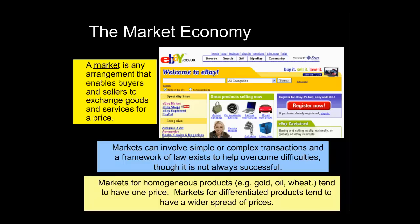Markets can be for two general sorts of products. One is what we might call homogenous products, which tend to have one price. By homogenous we mean they are homogenous at least in the eyes of the consumer, and they normally involve commodities such as gold, oil, wheat, cocoa, coffee, and tea. It's very difficult for sellers, particularly in a competitive market, to raise the price of these products, because any seller that tries will be undercut by another seller at a lower price.